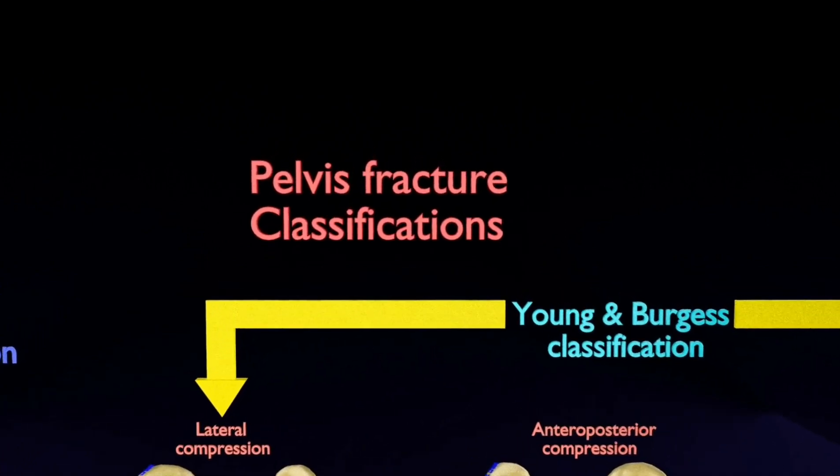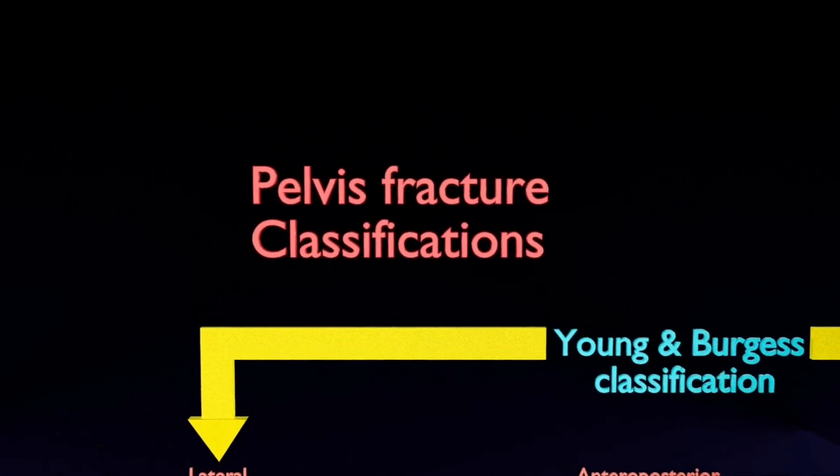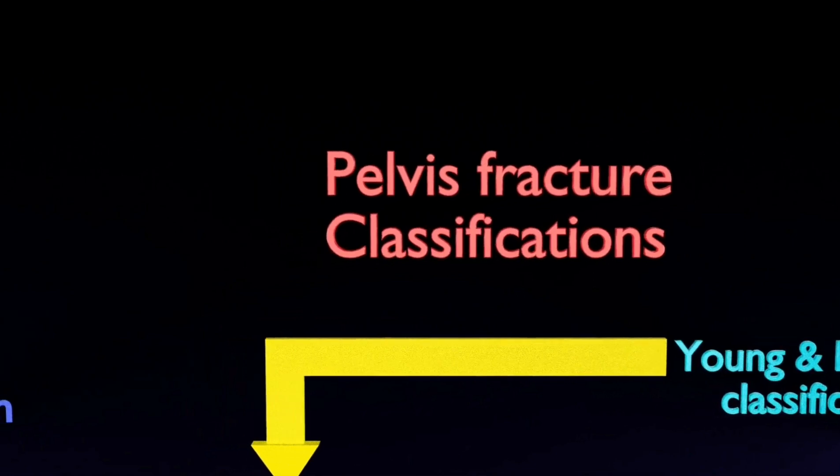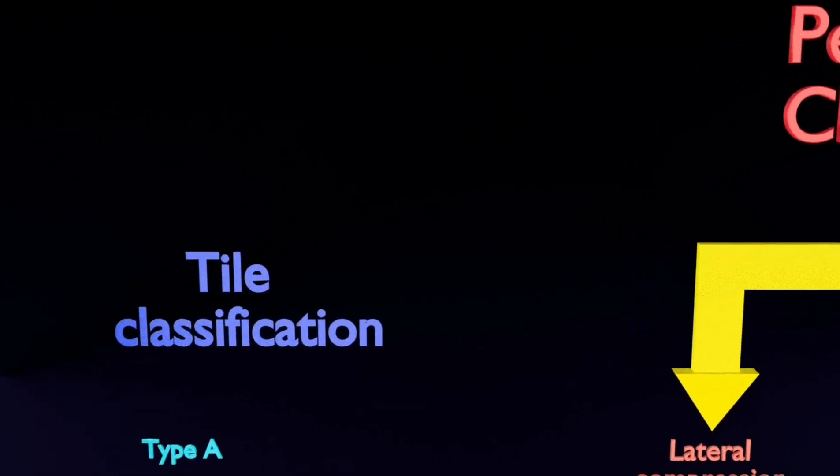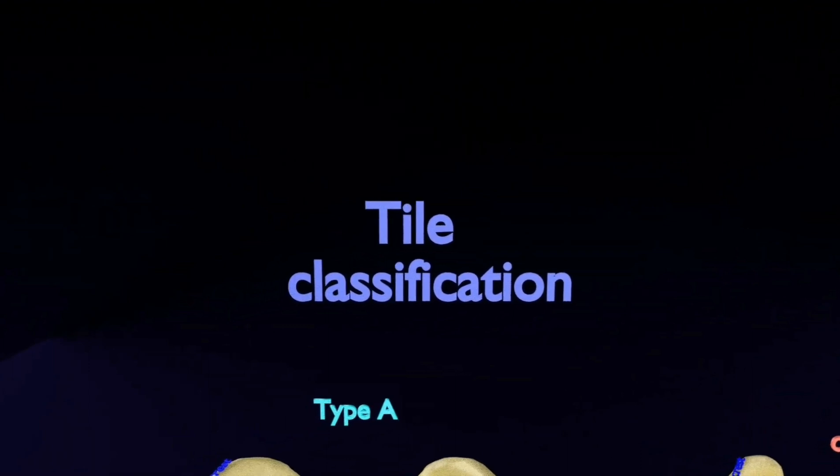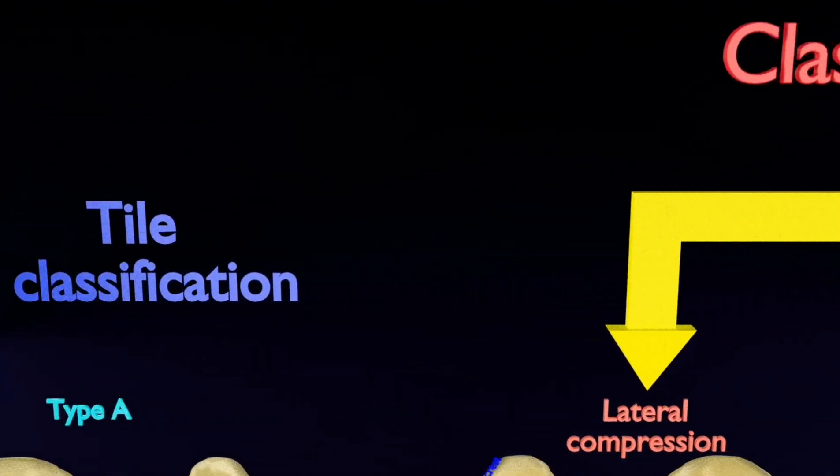This video illustrates the common classifications of pelvis fractures that are the Tile classification and the Young and Burgess classification. The Young and Burgess classification is a modification of the earlier Tile classification and is the recommended and most widely used classification system for pelvic ring fractures.